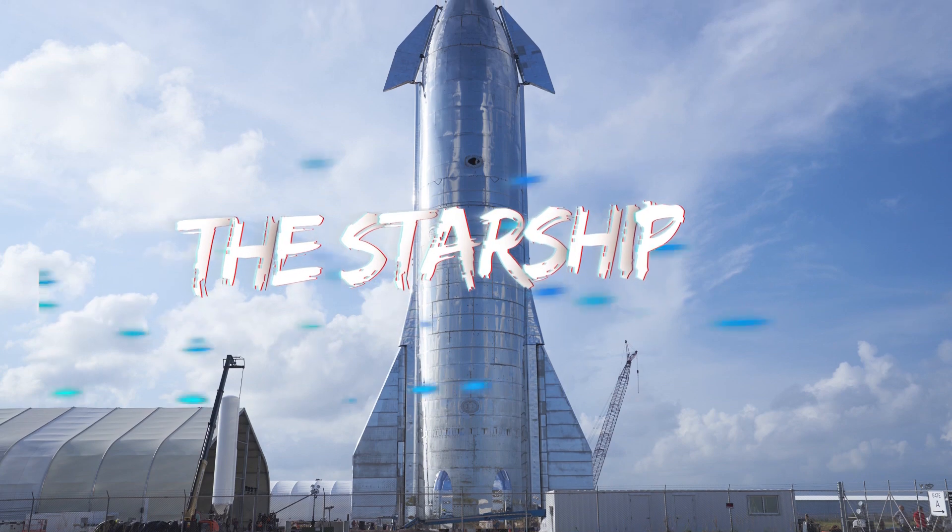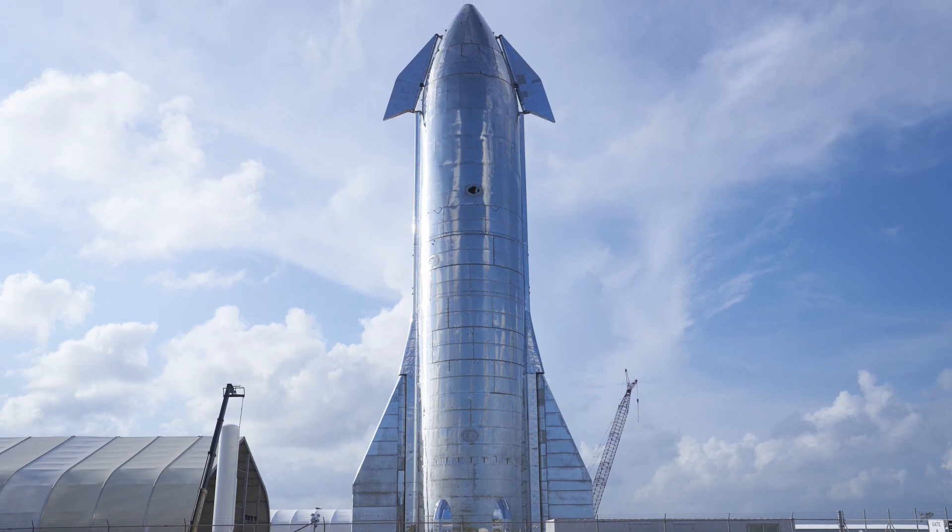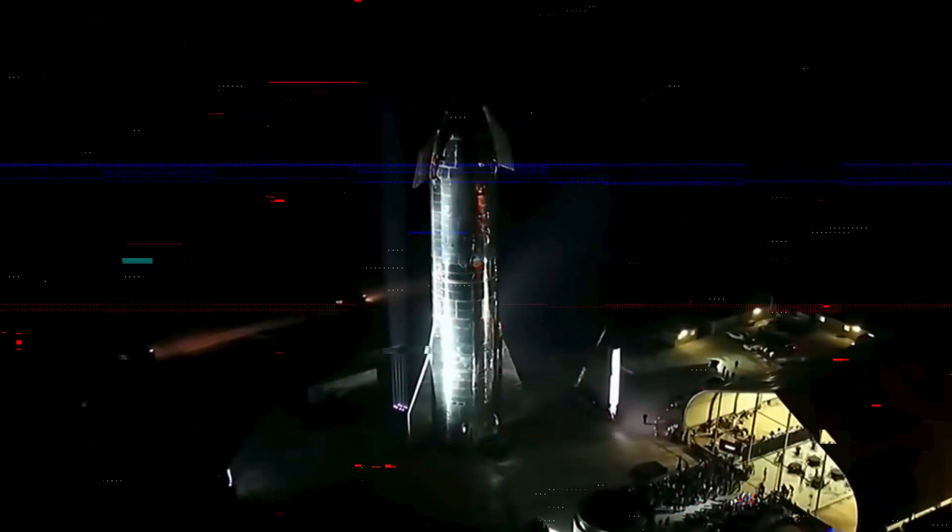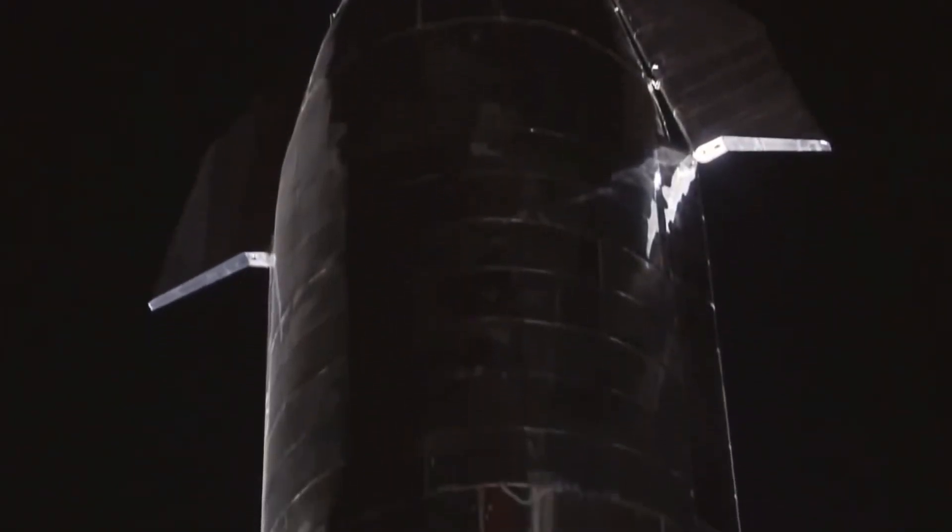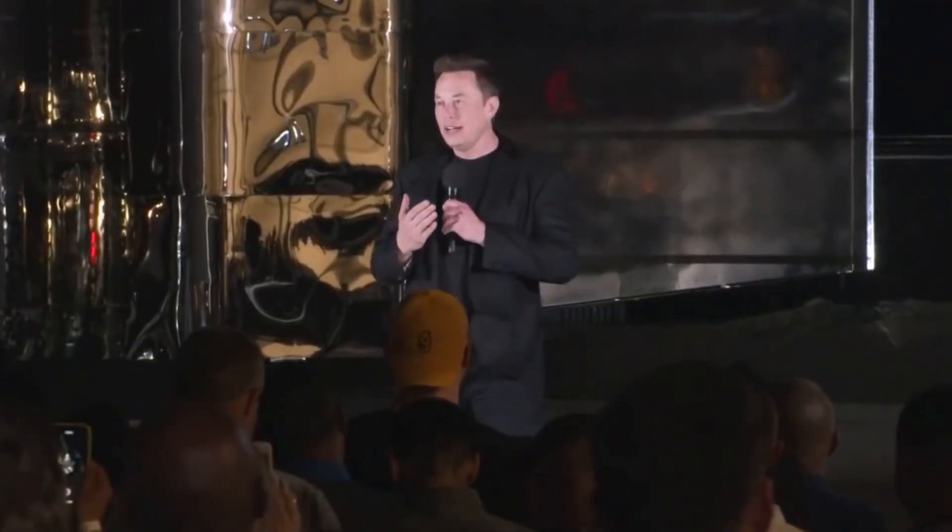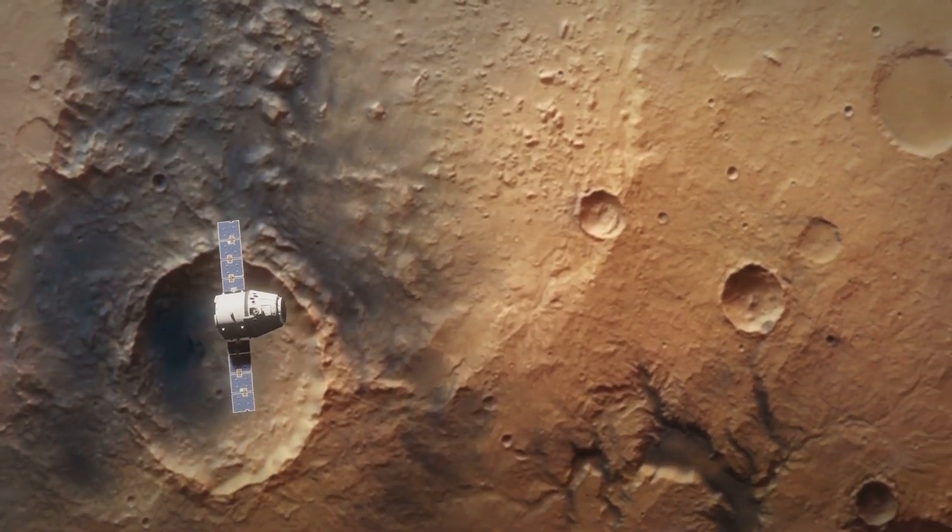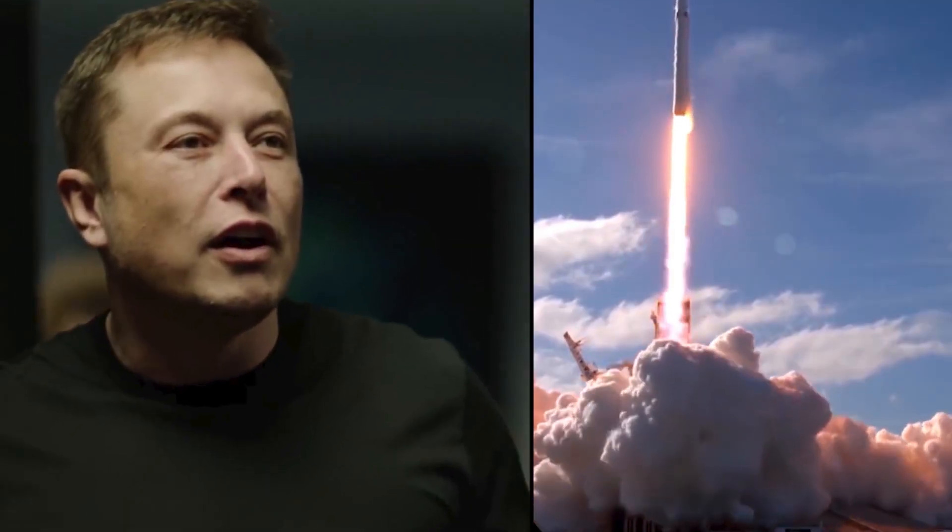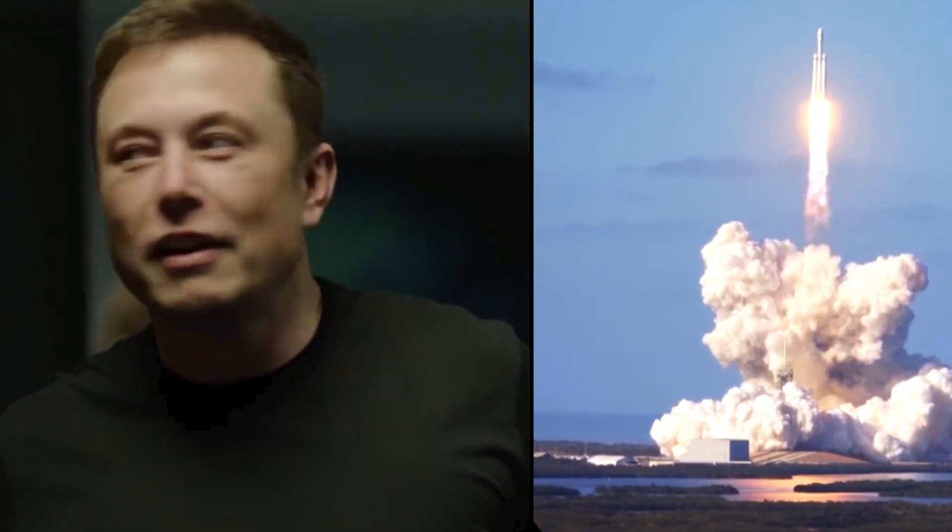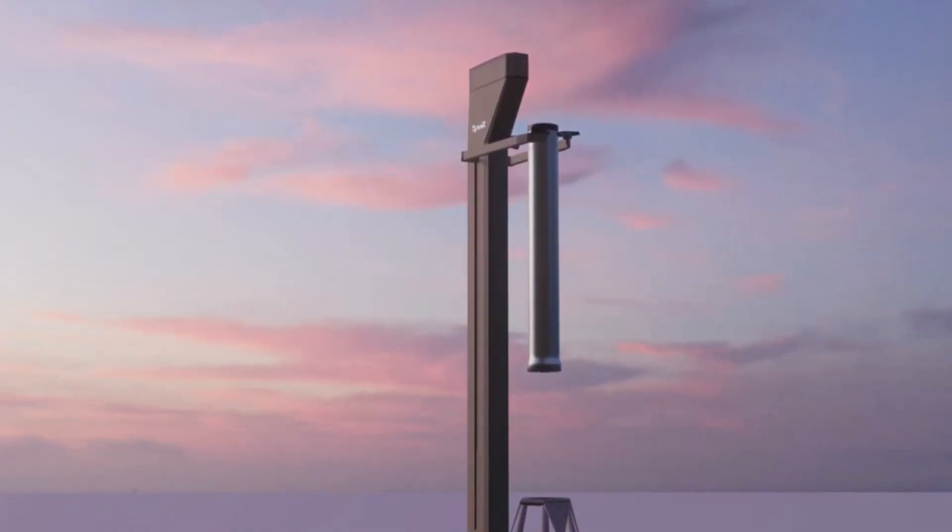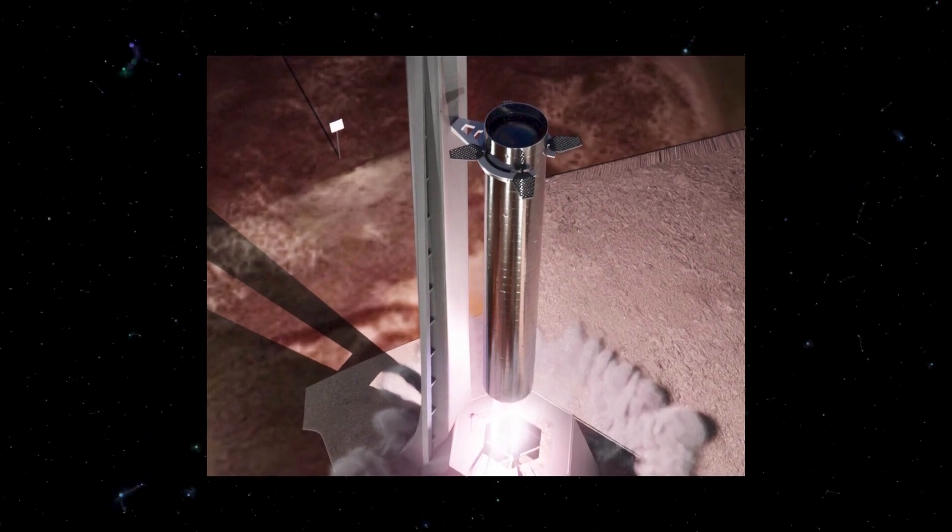Over the last year, SpaceX has been hard at work developing the Starship rocket system. When it's completed, it will most likely be the first fully reusable launch system and will be able to take trips to low Earth orbit, the Moon, and yes, even to Mars. According to Musk, when the rocket returns to Earth, it will be caught by something he calls the launch tower. Musk let everyone know this through a tweet that was released in response to a question from one of his followers.